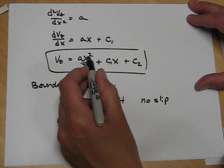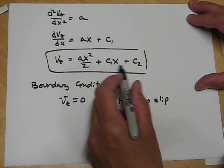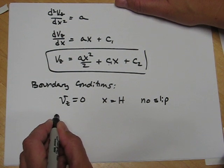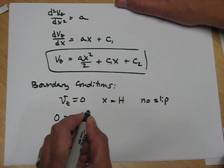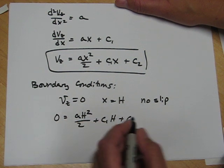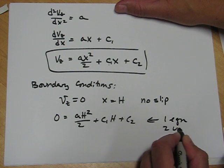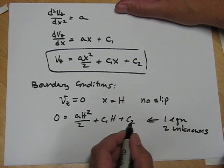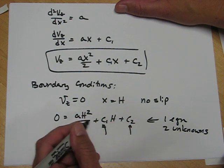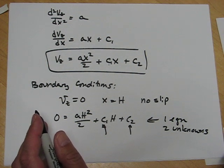So at x equal h, we can put h's in here for x. We put vz equals zero. We get one equation in the two unknowns, c1 and c2. So we get zero equals a h squared over two plus c1 h plus c2. So this is one equation, two unknowns. These are the two unknowns, c2 and c1. h is known, a we know from a previous slide is minus rho g cos beta over mu.